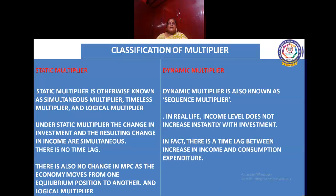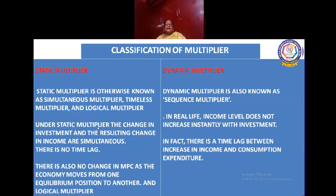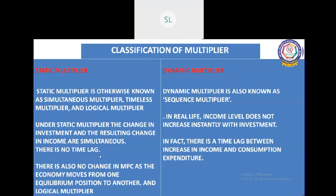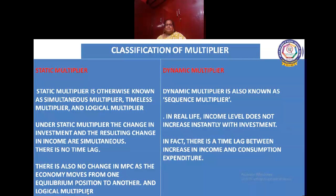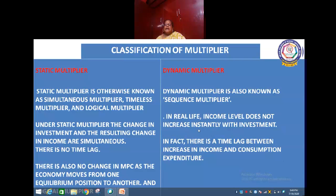Classification of a Multiplier — Static and Dynamic Multiplier. Static multiplier is otherwise known as simultaneous multiplier, timeless multiplier, and logical multiplier. Under static multiplier, the change in investment and the resulting change in income are simultaneous — there is no time lapse to move from one equilibrium position to another. Dynamic multiplier is also known as sequence multiplier. In real life, income level does not increase instantly with investment; in fact, there is a time lapse between increase in income and consumption expenditure.